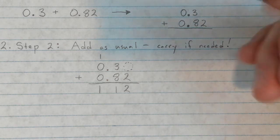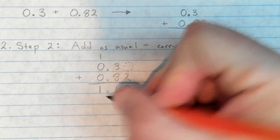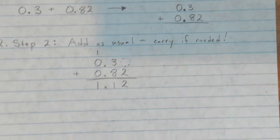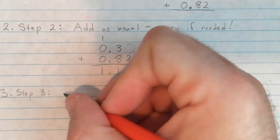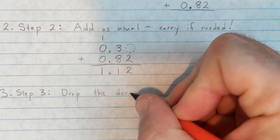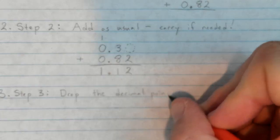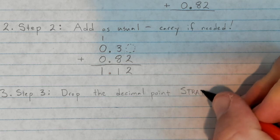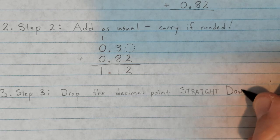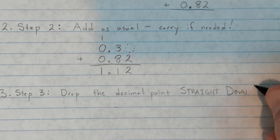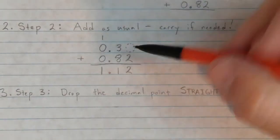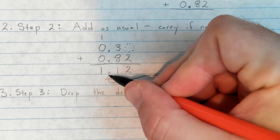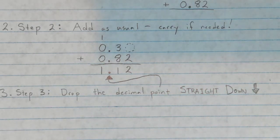One plus nothing plus nothing is just one. Now step three: bring the decimal straight down. Drop the decimal point straight down into your answer. This is specifically for adding and subtracting — when we get into multiplication and division it will be a little different — but for now, drop the decimal point straight down.